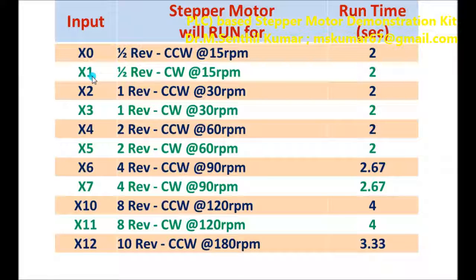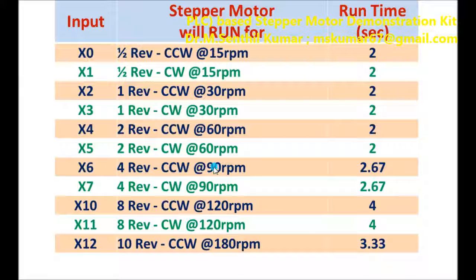If you press X1: half a revolution clockwise at 15 RPM. X2: one revolution counterclockwise at 30 RPM. X3: one revolution clockwise at 30 RPM. X4: two revolutions counterclockwise at 60 RPM. X5: two revolutions clockwise at 60 RPM. X6: four revolutions counterclockwise at 90 RPM.